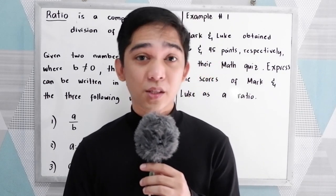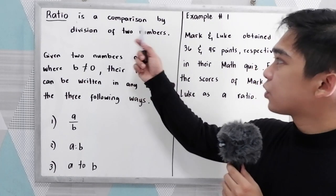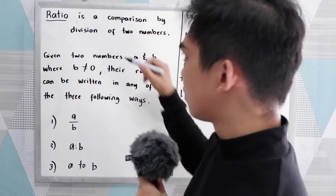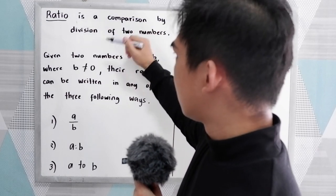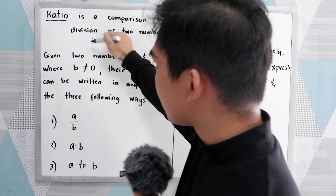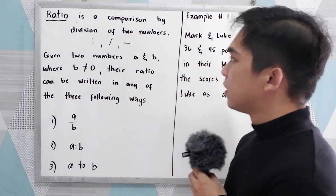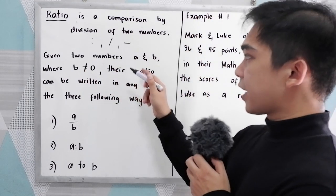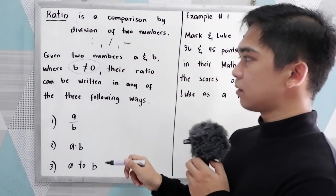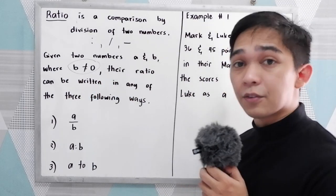First, let us define what a ratio is. A ratio is a comparison by division of two numbers. Given two numbers a and b, where b is not equal to zero — this is our condition — because b is our denominator. b must not be equal to zero because if b is zero, that will give us undefined.